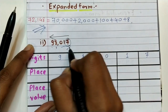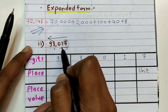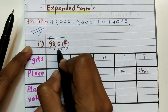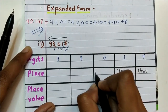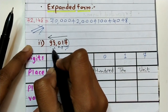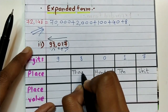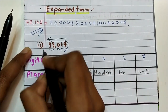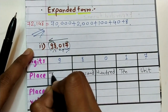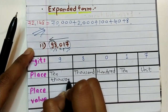Firstly, place of seven — seven is at unit place, so here we write unit. Then one is at tens place, so we write ten. Then zero is at hundreds place, so we write hundred. Eight is at thousands place, so we write thousand.